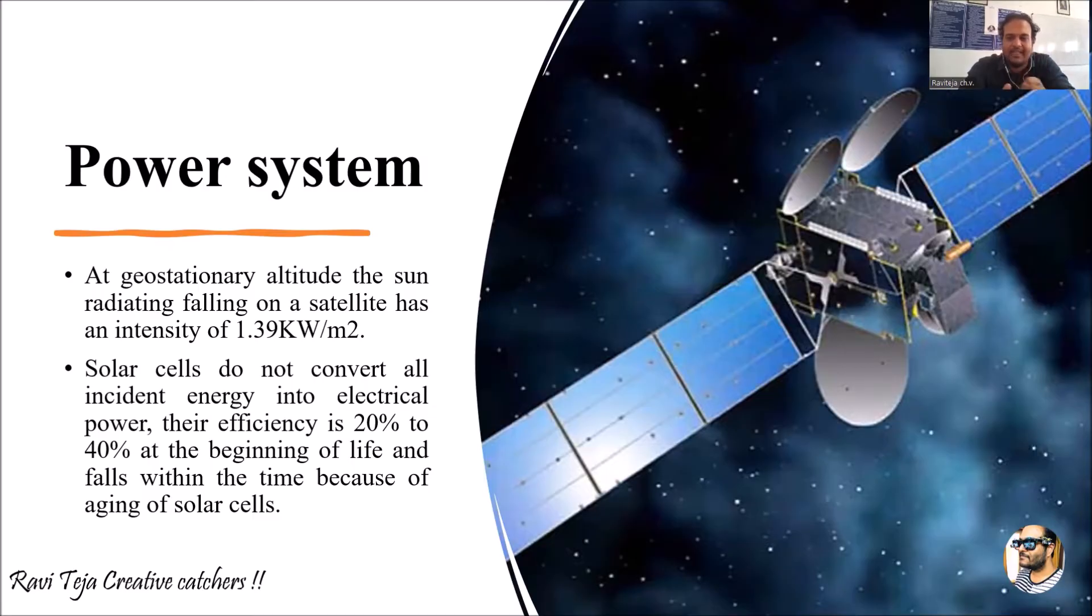Coming to the technical specifications of this power system with respect to a satellite: at geostationary altitude, the sun radiation falling on a satellite has an intensity of 1.39 kilowatts per meter square. So at geostationary altitude, the sun rays falling on a particular satellite has an intensity of 1.39 kilowatts per meter square.